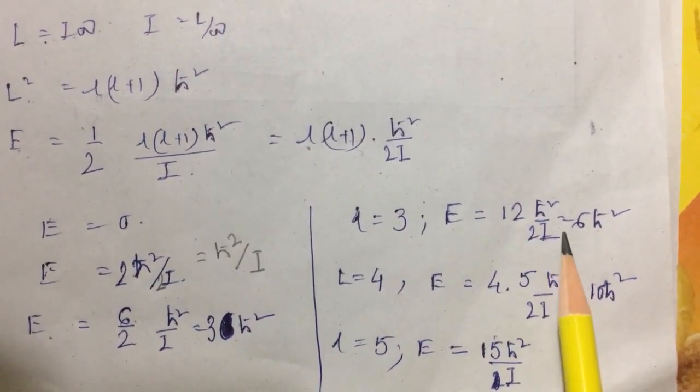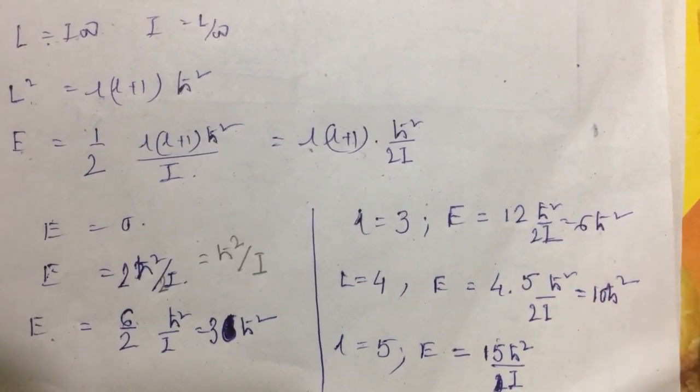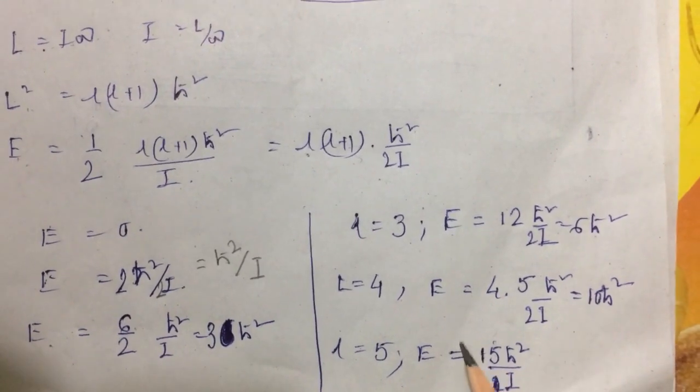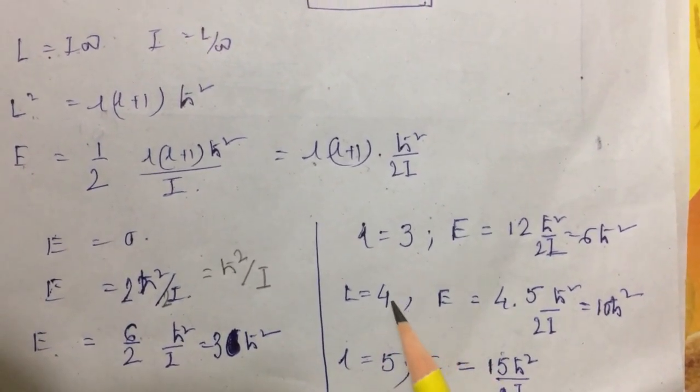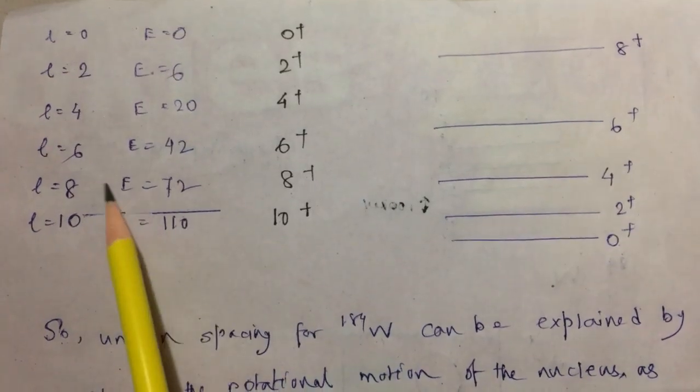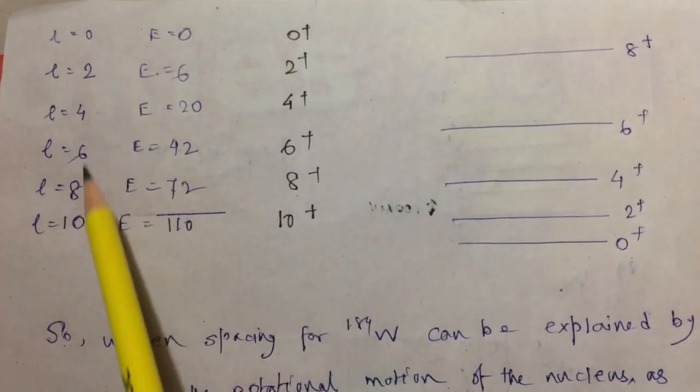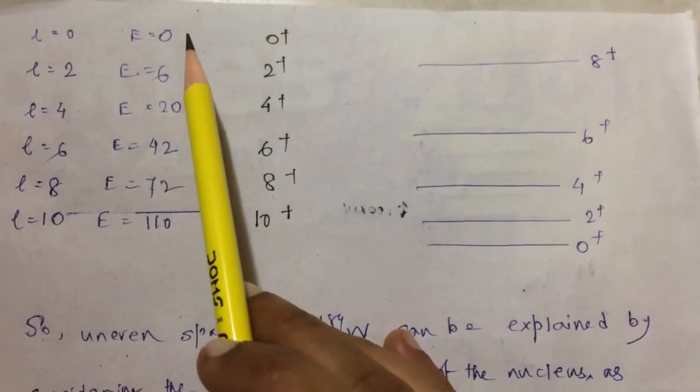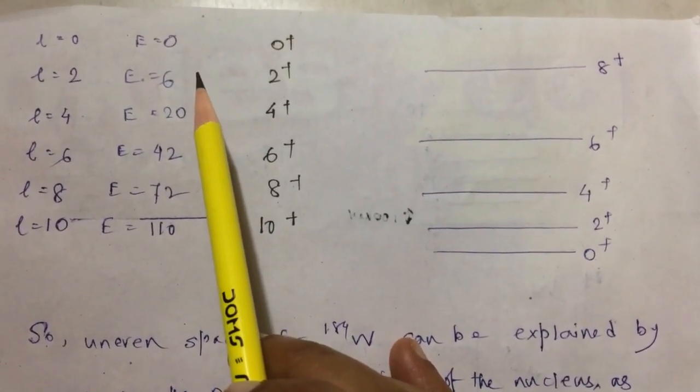And so on, we can find the energy value corresponding to L equal to 4, L equal to 5, and so on. Now I have written the energy values corresponding to these L values, where we have taken the ℏ²/2I factor in common.